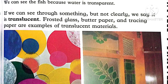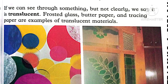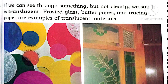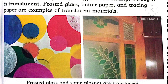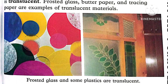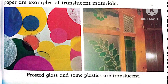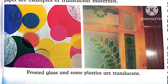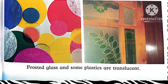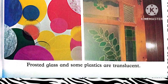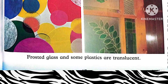Frosted glass, butter paper, and tracing paper are examples of translucent objects. With translucent objects, we can see some light from the other side, but it is not clear.